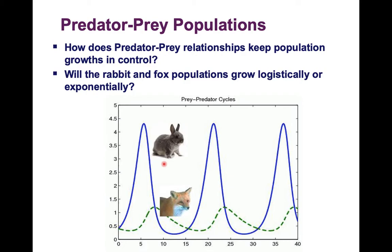The first thing you might notice is that the prey population is much larger than the predator population — there is usually more prey than predators. As prey numbers go up, predator numbers go up too because there's more food. Then as there are too many predators feeding on the prey, the prey numbers start to go down.